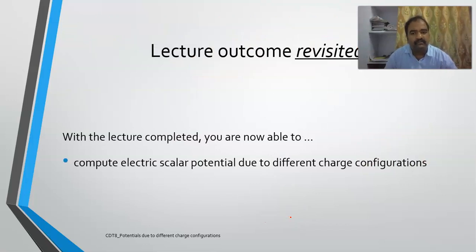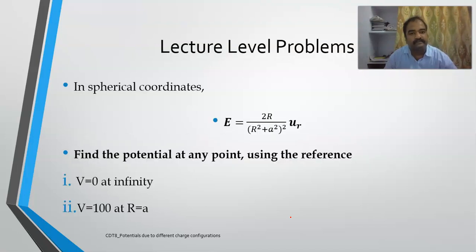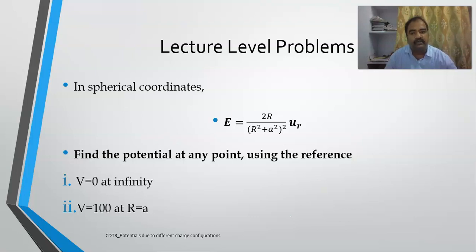These are the key examples for computing electrostatic potentials due to different charge configurations. I hope you are now able to compute these potentials. For homework, an electric field vector has been given and you are required to determine the potential at any point using the given references. Thank you.